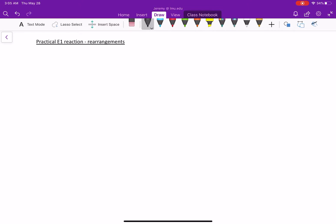Okay, so one other example of our practical E1 reaction that we have to consider and really know and understand is that practical E1 reactions can undergo rearrangements. So any time we form a carbocation intermediate, rearrangements are going to be possible.